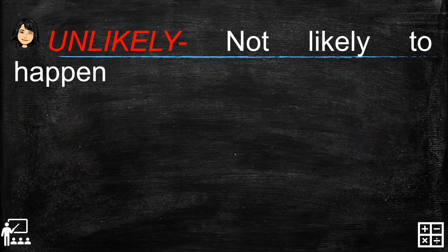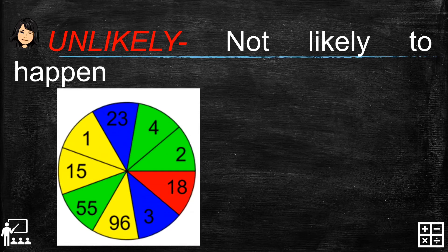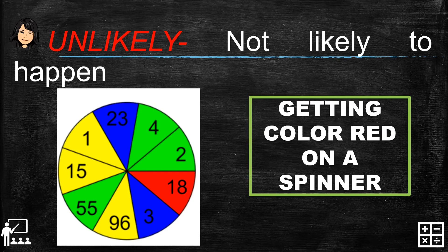Next is unlikely to happen. I have here a spinner with colors and numbers. Getting the color red on this spinner is unlikely to happen because as you can see on our spinner, there is only one red section. That's why it is unlikely to happen — one out of the total sections of the spinner is unlikely to happen.